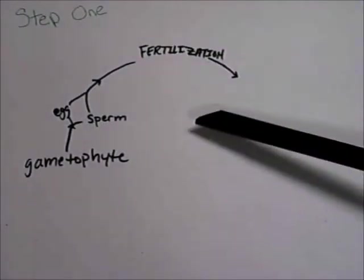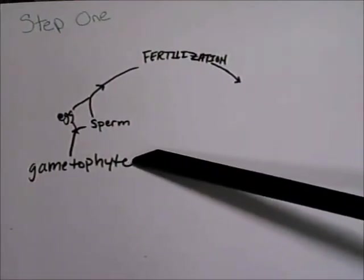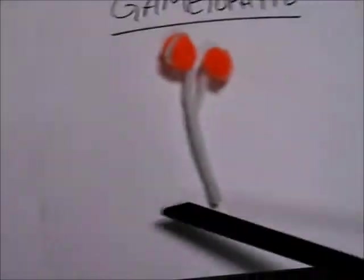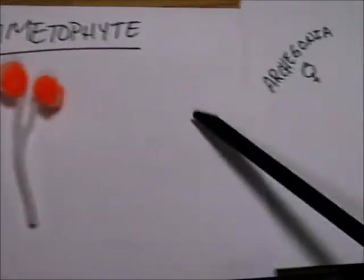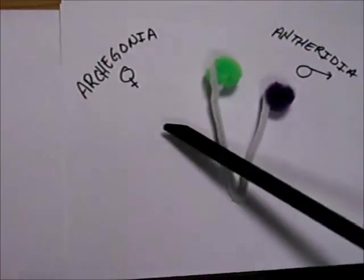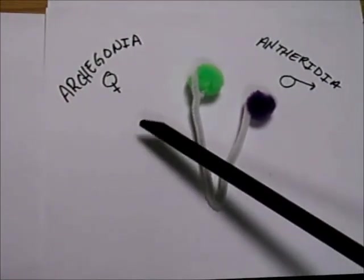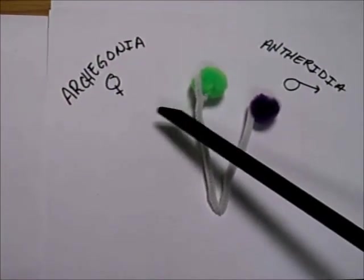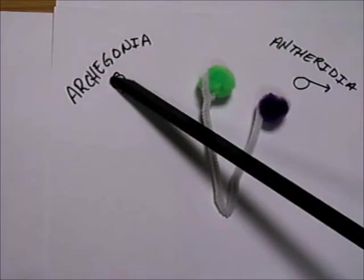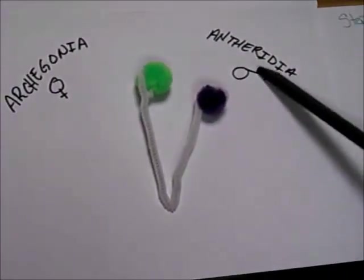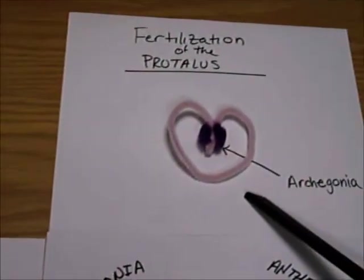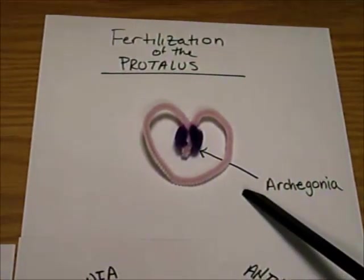The plant life cycle starts out in the gametophyte phase. After the gametophyte phase, it then goes through mitosis, which forms the female egg and the male sperm. The female egg goes to the archegonia and waits to be fertilized, while the sperm is released through the anthuridia, which is then gathered in the archegonia and starts fertilization.